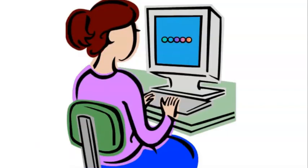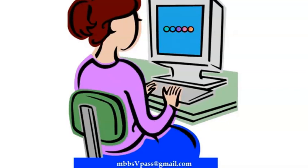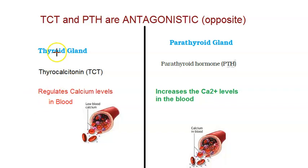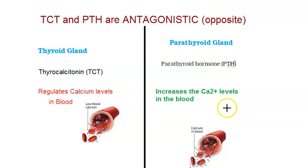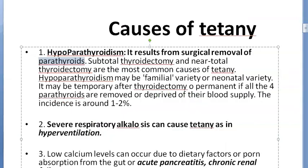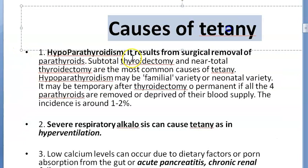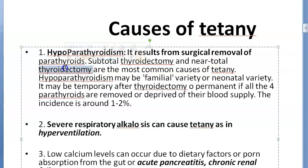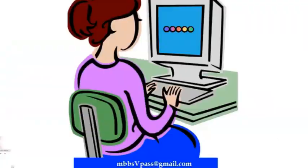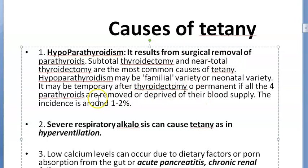The thyroid gland reduces calcium levels in the blood while the parathyroid increases calcium levels. If the parathyroids are removed during subtotal or near-total thyroidectomy, that can cause tetany due to hypocalcemia. Hypoparathyroidism can also be familial — some people congenitally lack parathyroid glands.